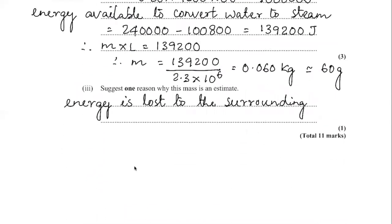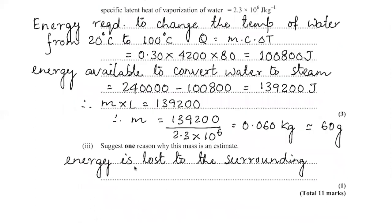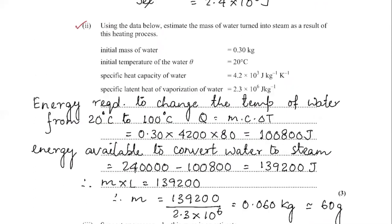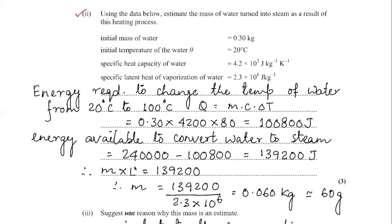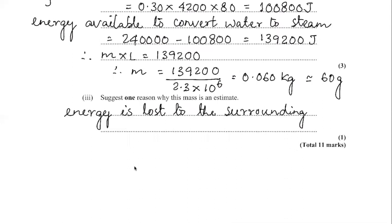The last part asked why this is an estimate. This is an estimate because we are not taking into account the heat lost to the surroundings. There must be some heat lost to the surroundings, so this is how you solve the question.